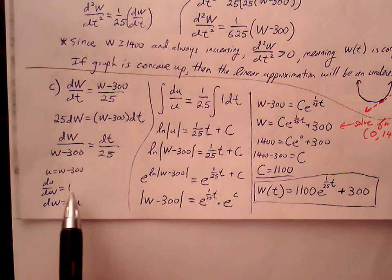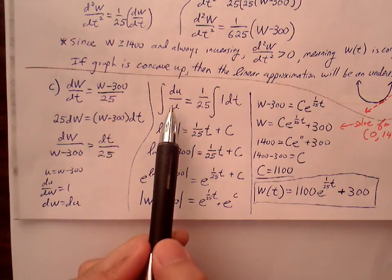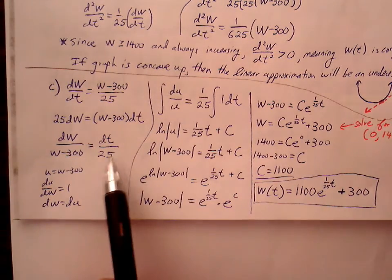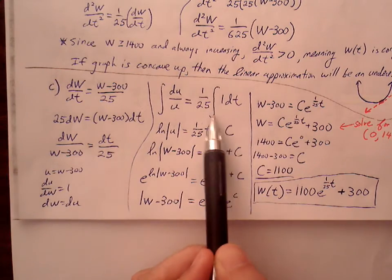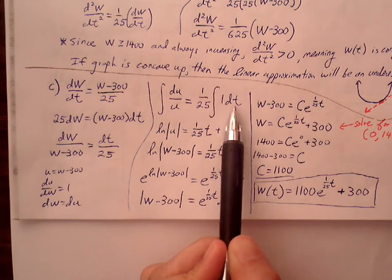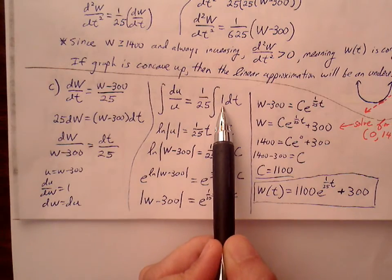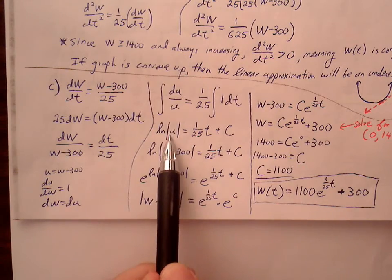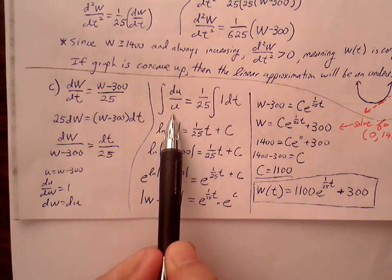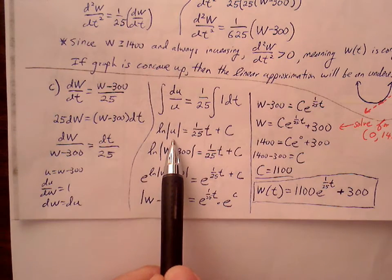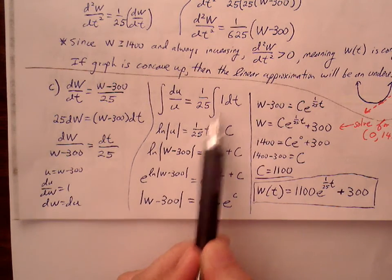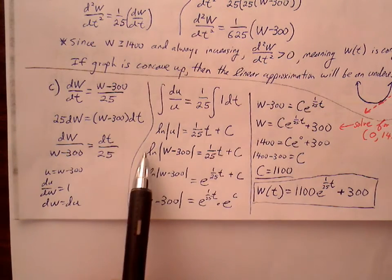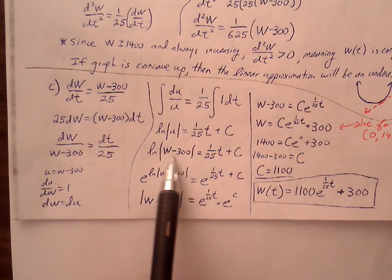dW gets replaced with du. W - 300 becomes u value, becomes variable u. Take the antiderivative. The right side, I can push that 1/25 out as a coefficient. Put a 1 in front of dt as a reminder that when I take the antiderivative, that 1 is going to turn into a t. The left side, cleanly, is going to match up nicely with the rule that we already have, which is integral of 1/u du, natural log absolute value of u. The right side, integral of 1 becomes t. The 1/25 tags along, 1/25(t) plus C. Replace the u back in terms of W, W - 300.